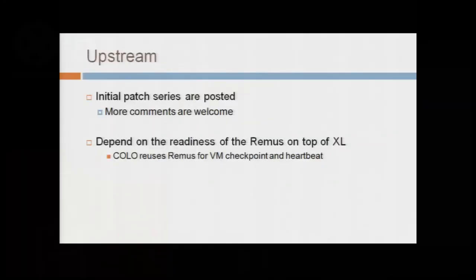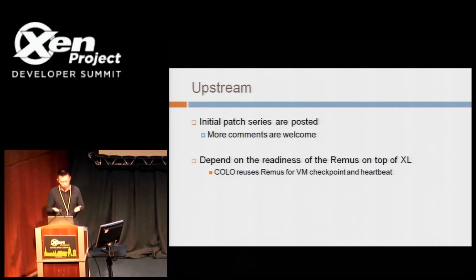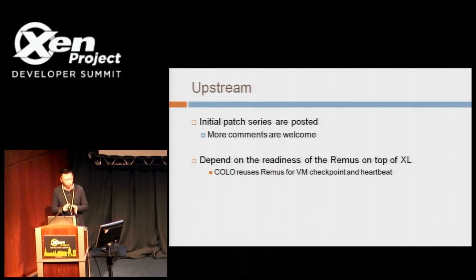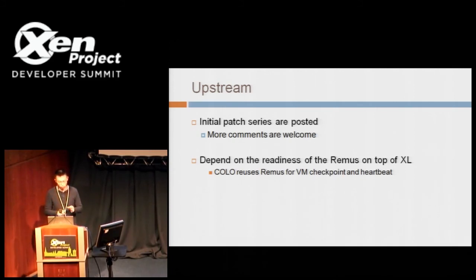Regarding upstream: we have already pushed the initial patch upstream this July. There are a few comments and more comments are welcome. Colo uses Remus for VM checkpoint and heartbeat. When we did the development, we relied on Xen 4.2 (Xen D). But as the community moves from Xen D to Xen Light, there could be more work to be done on Xen Light to support Remus.